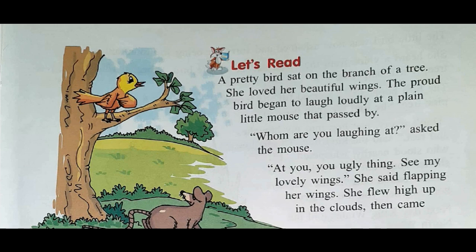A pretty bird sat on the branch of a tree. She loved her wings. The proud bird began to laugh loudly at a plain little mouse that passed by. So in this paragraph we learn that a pretty bird was sitting on a branch, very proud of her beautiful wings, and she began to laugh at a simple little mouse who passed by.